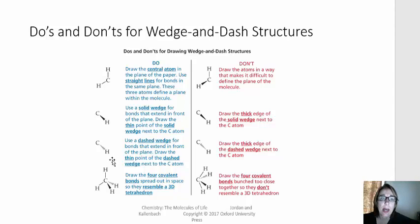And when you draw the wedge and the dash, make sure that the apex of the triangle, so the smaller end of the wedge, is at the carbon. And that kind of shows perspective of the bond going from the carbon to the hydrogen towards us in the wedge and away from us in the dash.